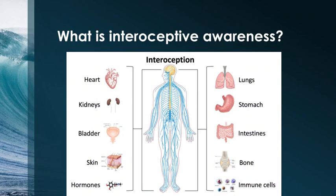For example, are we feeling attracted to somebody or not? How are our lungs — so that's our rate of breathing — whether our stomach is full or empty, whether our intestines need emptying, if our bones ache or are feeling okay, and how our immune system is functioning. That's a large range of different sensations, and each and all of these together are our interoceptive awareness.